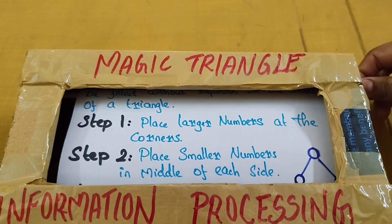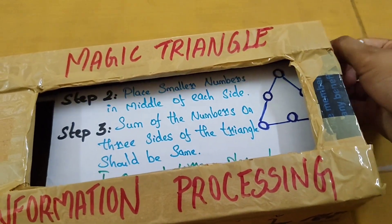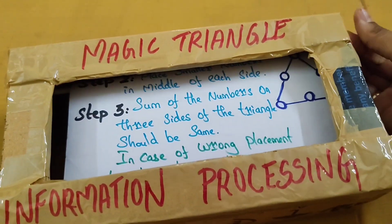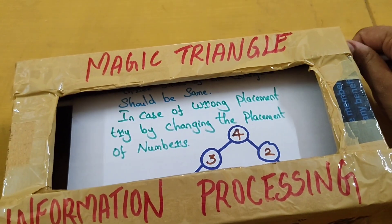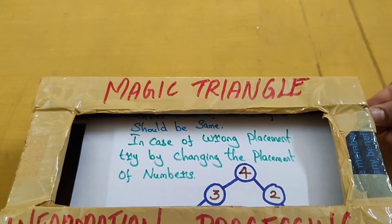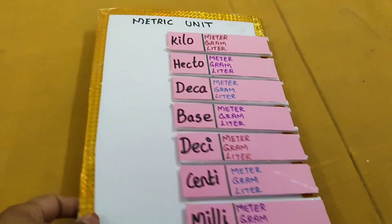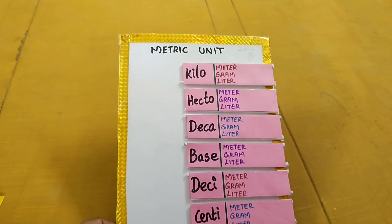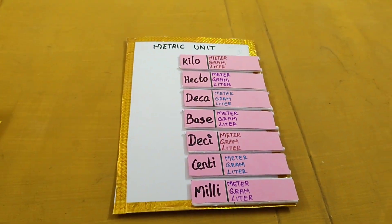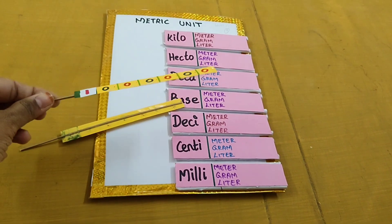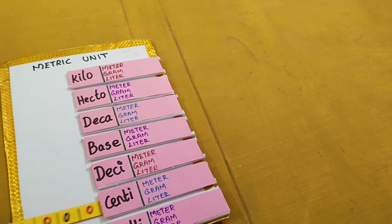This is information processing. The chart is step by step — steps 3 and 4. You can scroll down, read it and create it. In between, there is a working model. So now I have covered it. There are all the metric units: mill, centimeter, and base. The base is a very normal unit. We can see the meters, gram, etc.